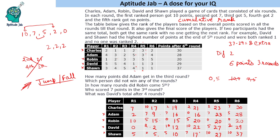Now let us answer the questions. The first question is: how many points did Adam get in the third round? In the third round, Adam got 7 points.